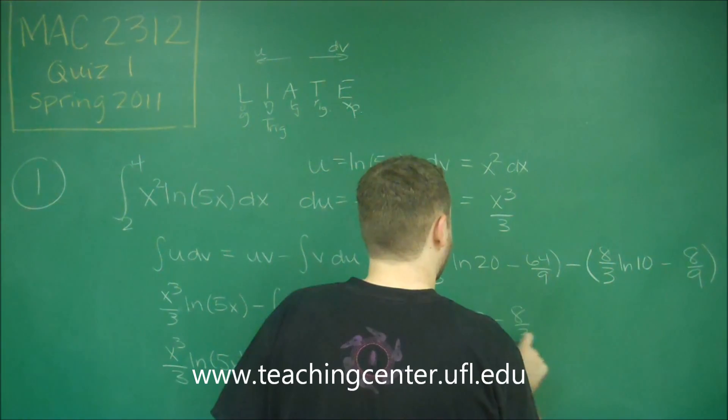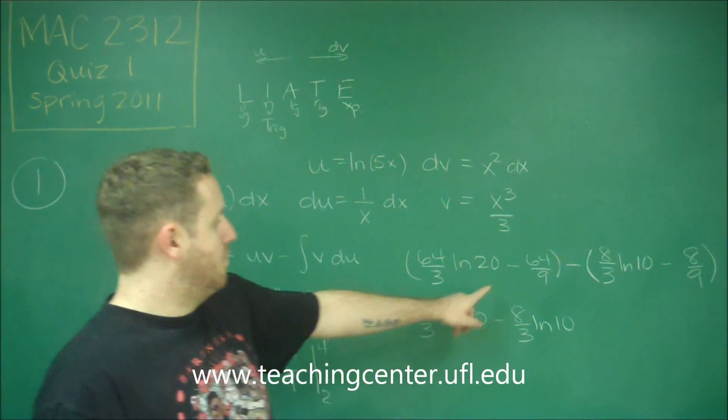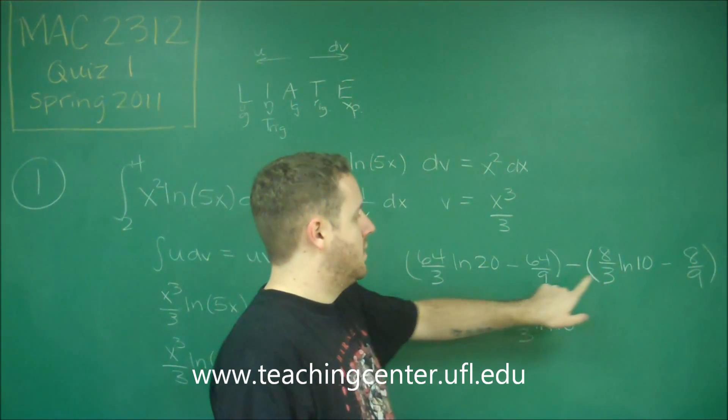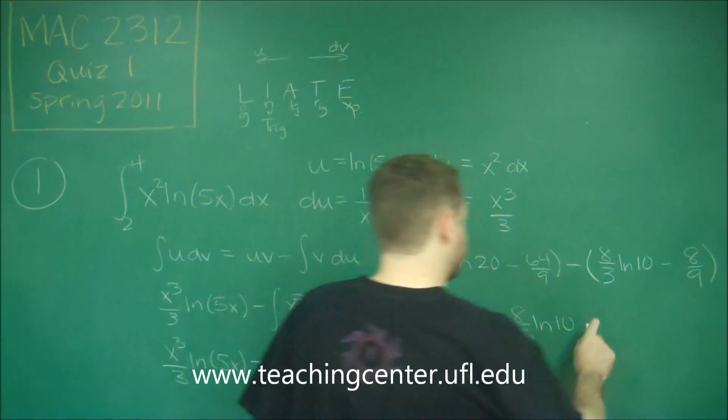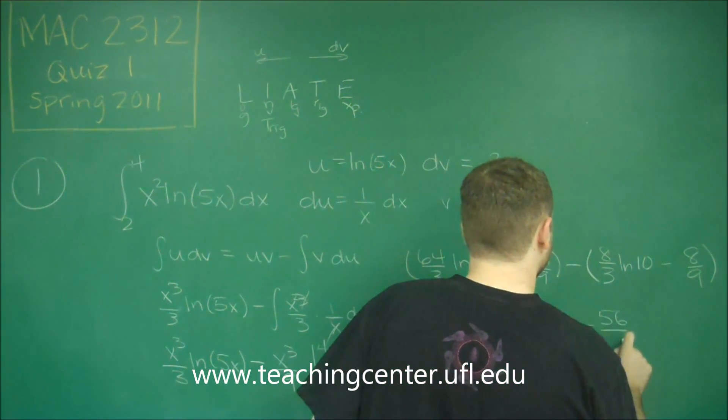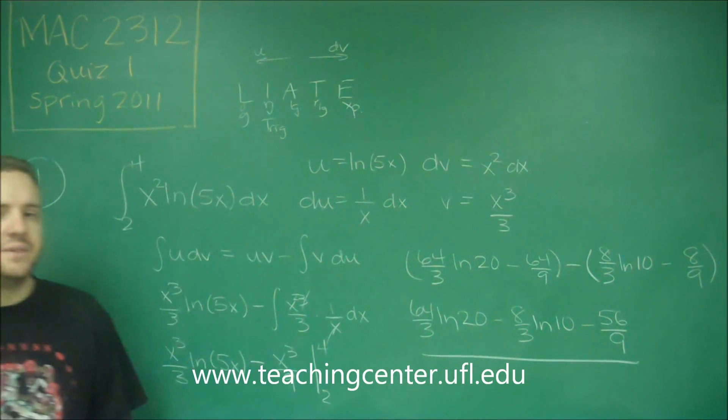Lastly, we have minus 64 over 9, plus 8 over 9. So that's going to give us negative 56 over 9. And that would be our definite integral.